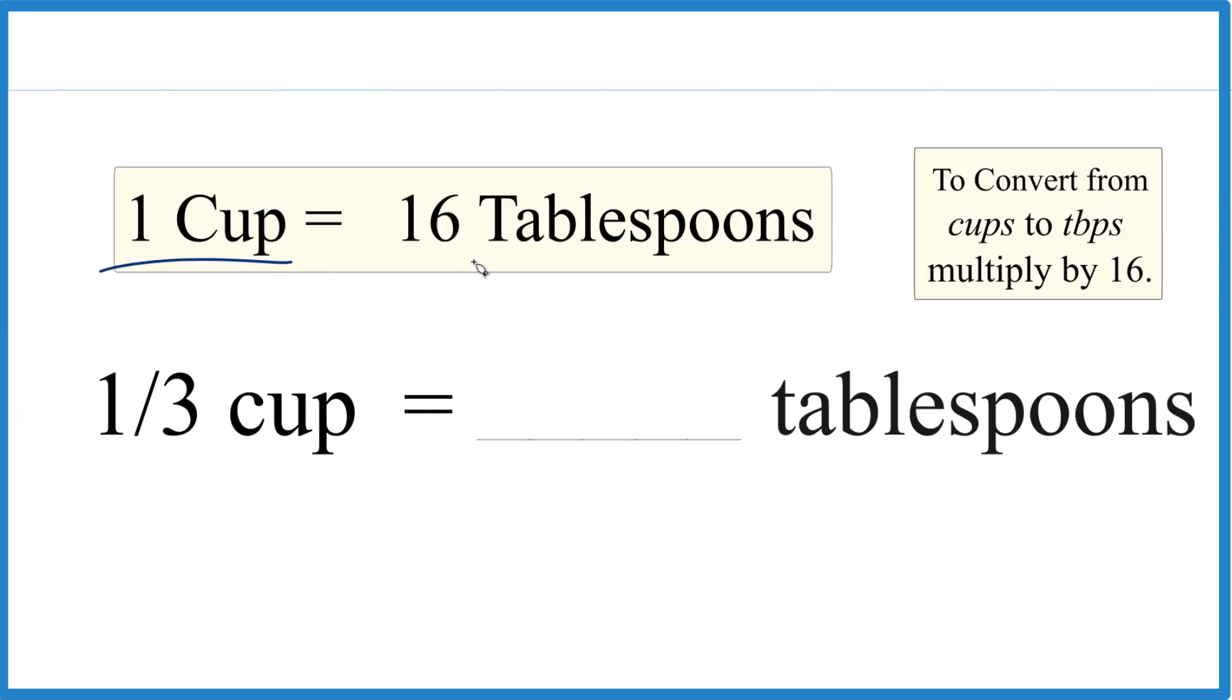First off, you need to know one cup equals 16 tablespoons. So if we're going from cups to tablespoons, we're just going to multiply by 16.